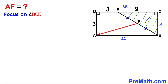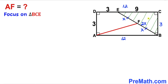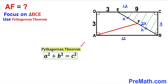Now let's focus on triangle BCE. We know that line segments EF and FB are equal length. Let's call each of them X, so the total length EB is X plus X, which is 2X. The side lengths of triangle BCE are 3, 9, and 2X. Since this is a right triangle, we apply the Pythagorean theorem: A² + B² = C². With A = 9, B = 3, and C = 2X.